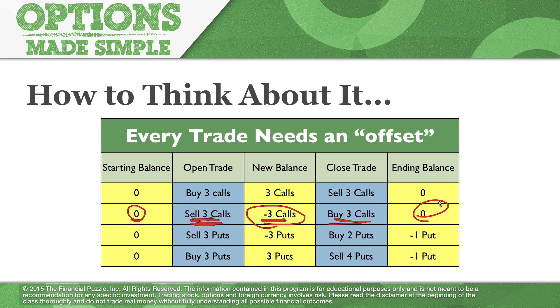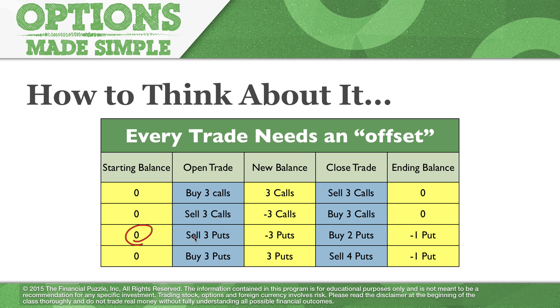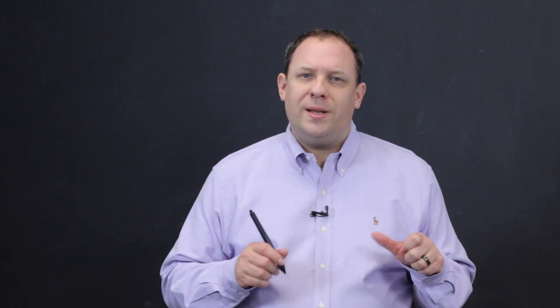With some trading platforms, they don't make you do an even number. So you may start off with a balance of zero, sell three put options — that's a naked put — giving you minus three puts in your account. If you want to offset that, you buy some back. But what if you only buy two? Your new balance is going to be minus one put. If you want to offset that additional one, you have to go buy one more to close the trade.